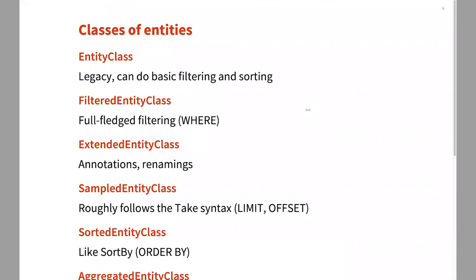So what are the classes of entities? EntityClass is the one most of you will already be familiar with, which supports either named entity classes like G8, or basic filtering and basic sorting. In general, they use predicates — for example, you can say EntityClass country with population greater than a billion and get India and China. You can also ask for things to be sorted by some parameter. Multiple conditions make the filter more restrictive — I believe it's AND, so it gets more restrictive if you put more filters.